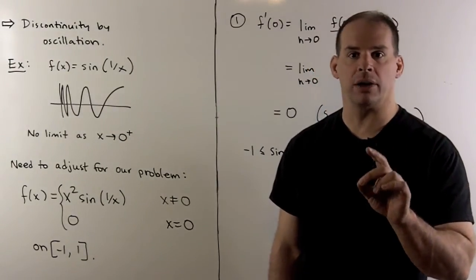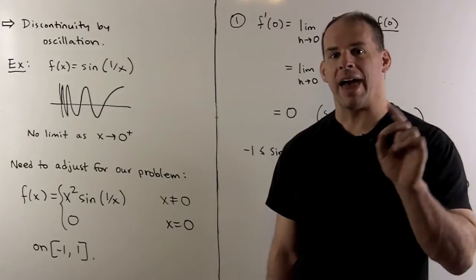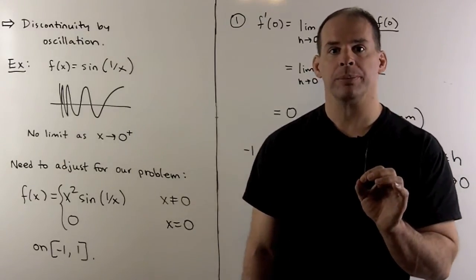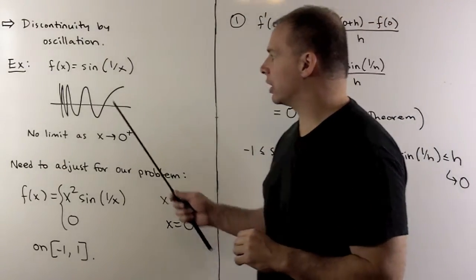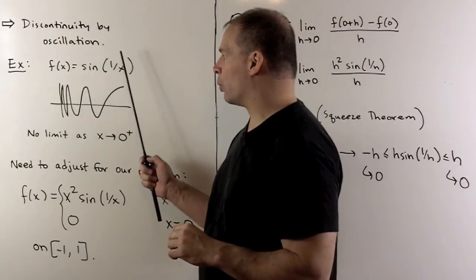Now, there's one kind of discontinuity we didn't try. That forced by oscillation. For instance, if I consider f(x) equal to sin(1/x),